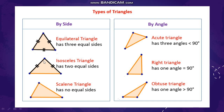Moving on to the second type, it is the isosceles triangle. An isosceles triangle has two sides equal. So a triangle with two equal sides is called an isosceles triangle.